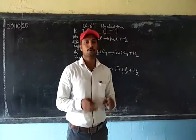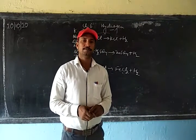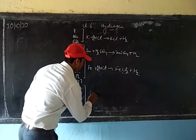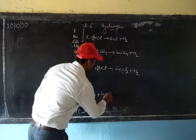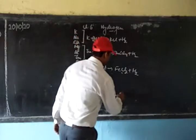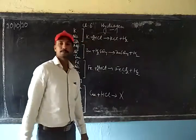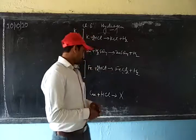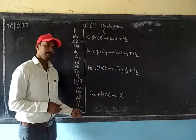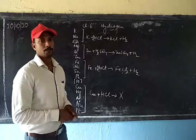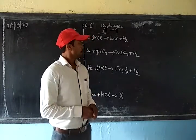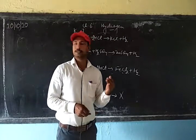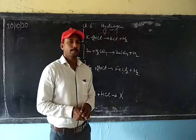The metals which are below hydrogen in the reactivity series are not going to show any kind of reaction with acid — they will not react at all. For example, copper plus hydrochloric acid: no reaction takes place, so we do not expect any hydrogen gas to be released. Neither will the other metals below hydrogen in the reactivity series show any reaction.